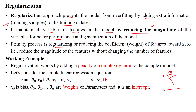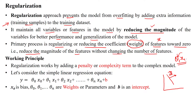The primary process is regularizing or reducing the coefficient — that means the weight. We are using the weight parameter with all the features. The weight parameter plays a major role in the data point. The weight parameter of each and every feature x is reduced towards zero, reducing the magnitude of the features without changing the number of features. Only the magnitude of the feature can be updated.